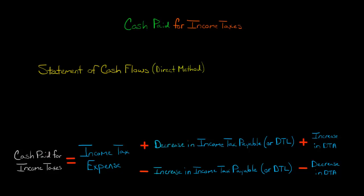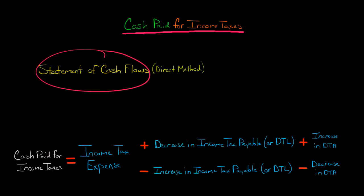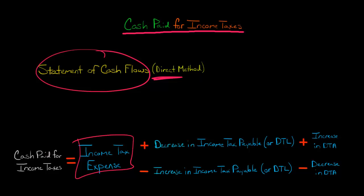In this video, we're going to discuss how to calculate the cash paid for income taxes when you're preparing the operating section of the statement of cash flows for a company that uses the direct method. To get cash paid for income taxes, you're going to start with income tax expense, and you're going to get this from the company's income statement.